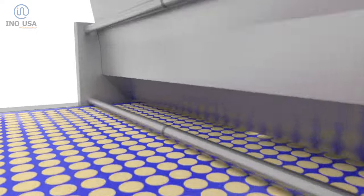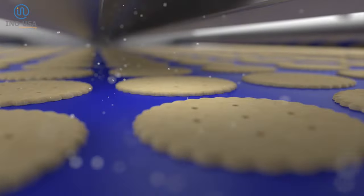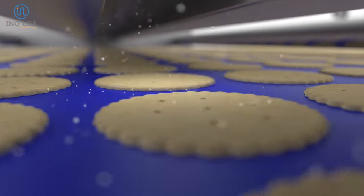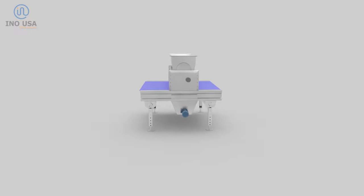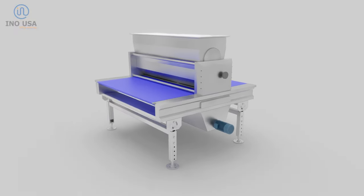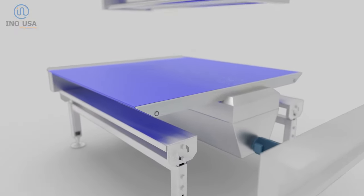Before entering the oven, the crackers go under a salt sprinkler system to get lightly salted. Any one or two-ply polyurethane belt suitable for small nose bars can be used here.